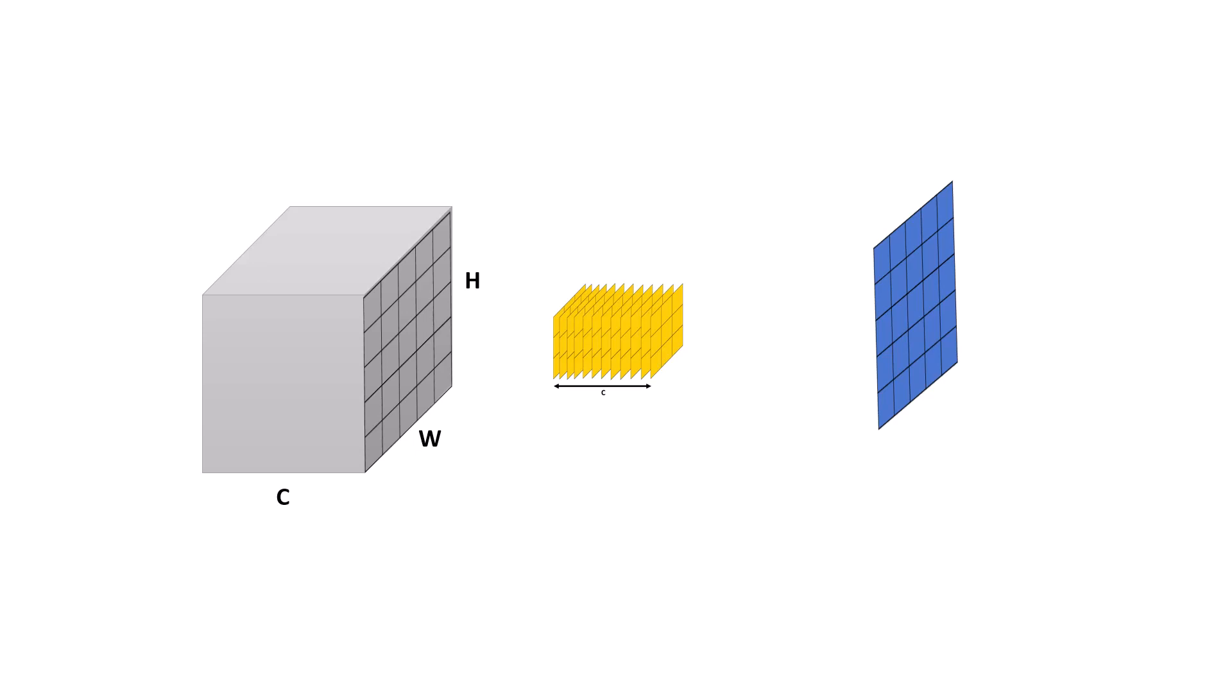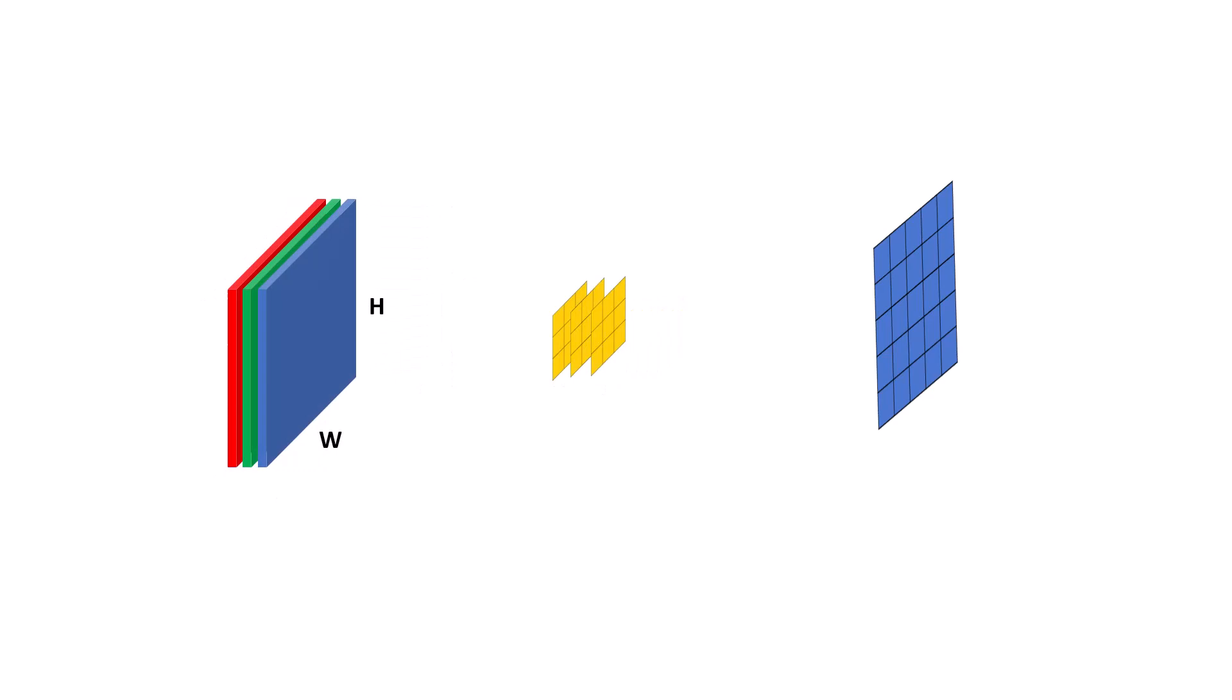But why do we need to have this view? That's because now we can consider the relationship between channels. In other words, we can say which channels are more informative than the others. For example, if our input volume is our RGB image, and our RGB image depicts a picture of a grass field, we know that the green channel is more informative than the other ones. Because the picture is all green, isn't it?